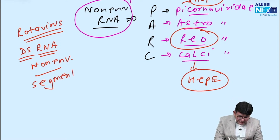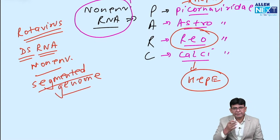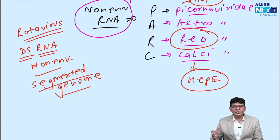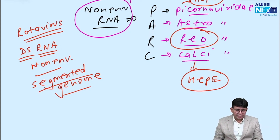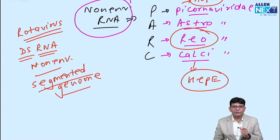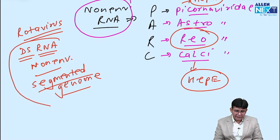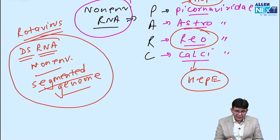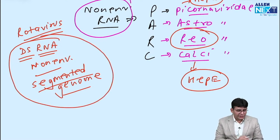One more important point about Rotavirus: it has a segmented genome. This is frequently asked. They can give you a case scenario about Rotavirus, and you need to recall that it is double-stranded RNA, non-enveloped, and has a segmented genome.